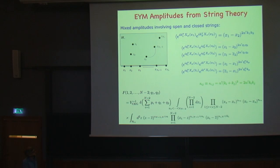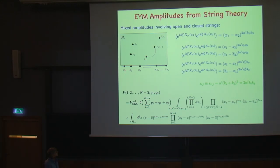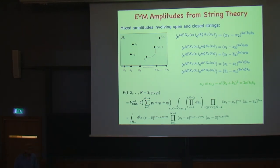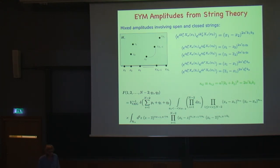What we need to know qualitatively is that we have to compute an integral where the Koba-Nielsen-like factors enter. The S_ij here are real kinematic invariants. We have an integration along the boundary for the open strings, which dictates their ordering. For the closed string, we allow different left and right moving momenta, Q1 and Q2, because this is precisely the source of new information for our Einstein-Yang-Mills amplitudes. We also have momentum conservation.